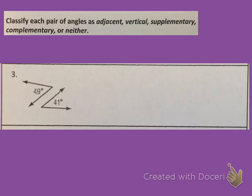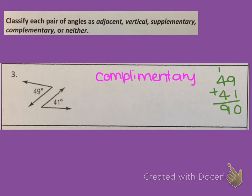Now I want you to look at this pair of angles and see what you observe about them. Think about what we learned in our notes and try this on your own. Pause to solve and press play to check when you're confident in your answer. These two angles are complementary because their measures add up to 90 degrees. They're not adjacent because they do not share a common side, and they're not vertical because they are not across from each other on intersecting lines.